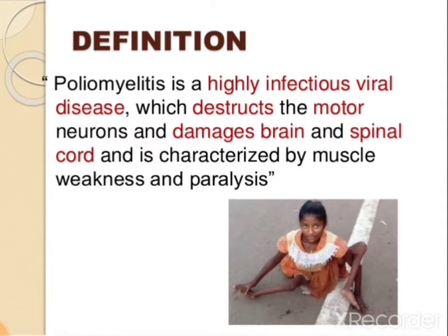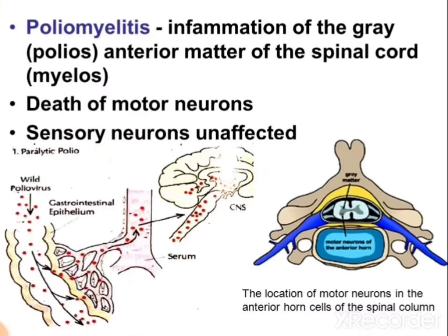Regarding applied anatomy: poliomyelitis is a highly infectious viral disease which destroys the motor neurons and damages the brain and spinal cord, characterized by muscle weakness and paralysis. Poliomyelitis is the inflammation of the grey anterior matter of the spinal cord, which leads to death of the motor neurons; the sensory neurons are unaffected.